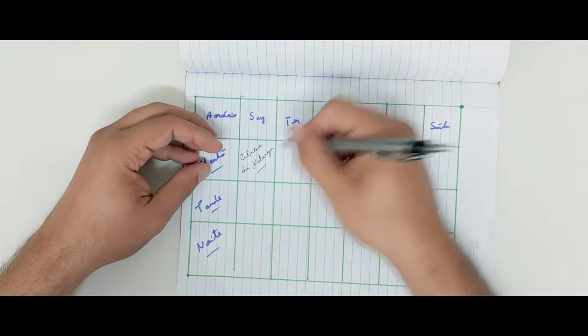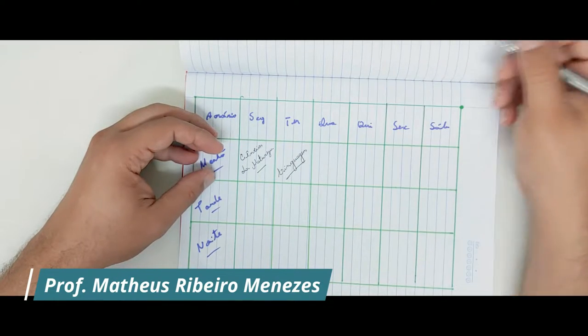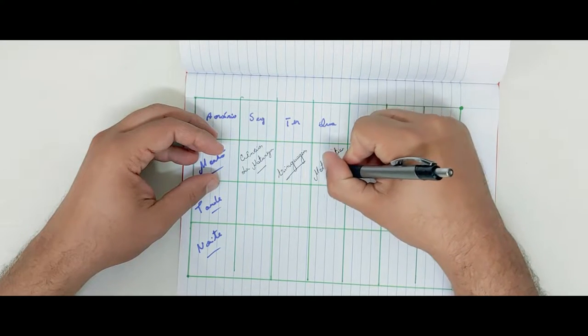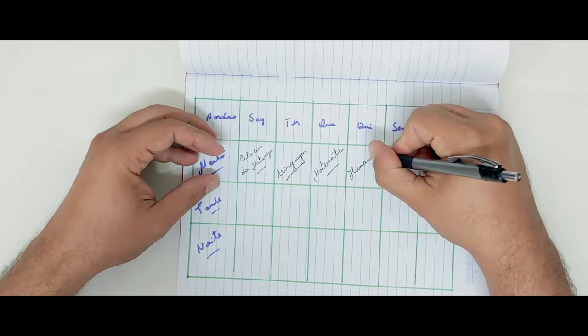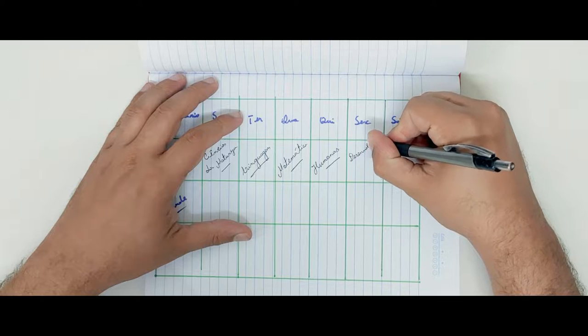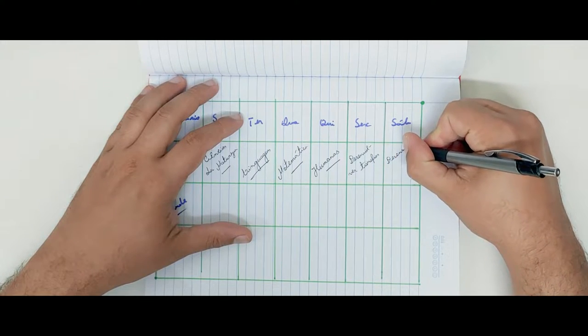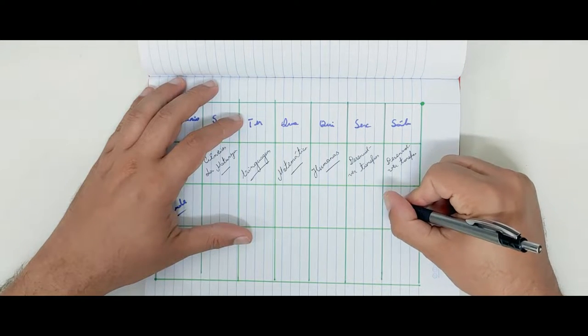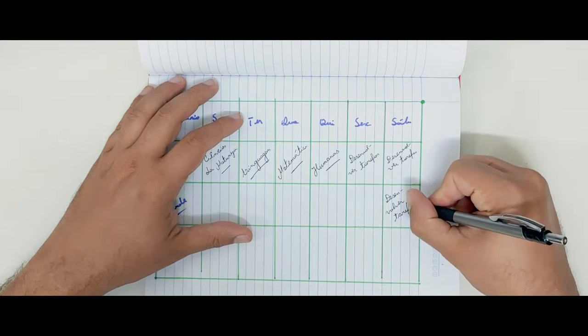Na terça eu fico com linguagens. Na quarta eu fico com matemática. E na quinta eu fico com humanas. Eu vou deixar minha sexta e meu sábado, manhã e tarde, para desenvolver tarefas. Não que isso possa mudar depois, está certo?